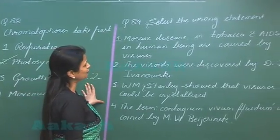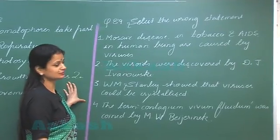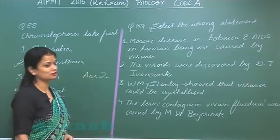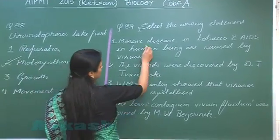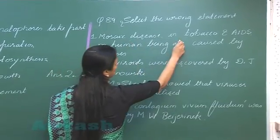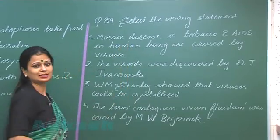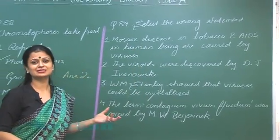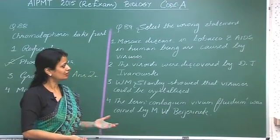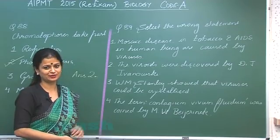Question number 89: we have to look for the wrong statement here. The first option states that mosaic disease and AIDS are both caused by viruses — that is correct. Mosaic disease in tobacco is caused by TMV virus, and AIDS is caused by HIV virus.